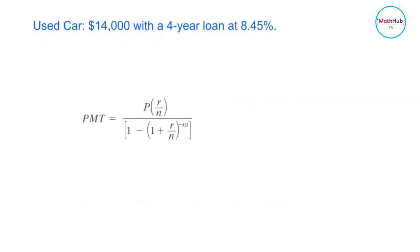For the used car, the used car only costs $14,000 and with a four-year loan at 8.45%, so 8.45 in decimal is 0.0845. N is equal to 12 because we're computing for the monthly payment and the duration of the loan is four years.